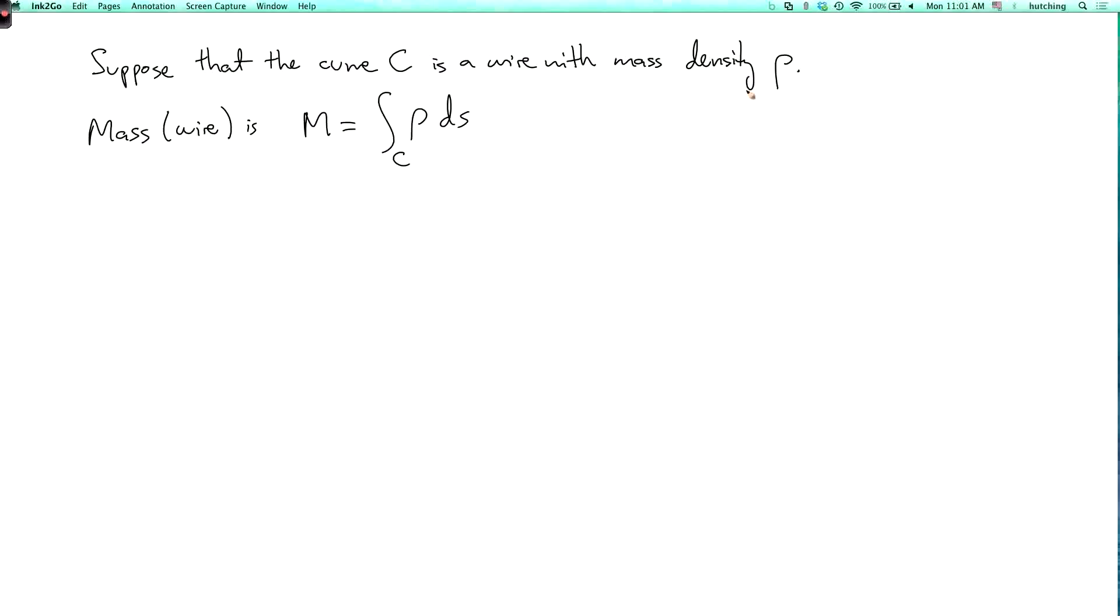So if the mass density is constant, then you're just going to get that constant times the length of the wire. If it's not constant, then it will be weighted more where it's higher.